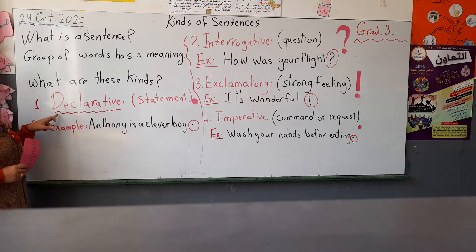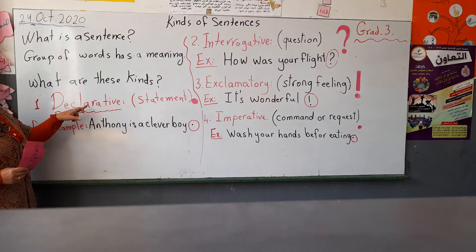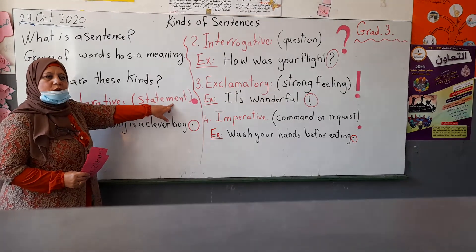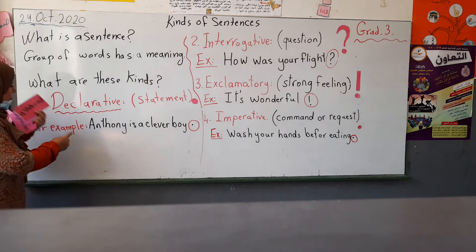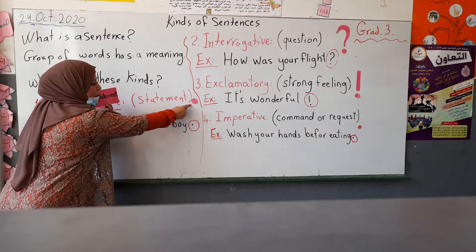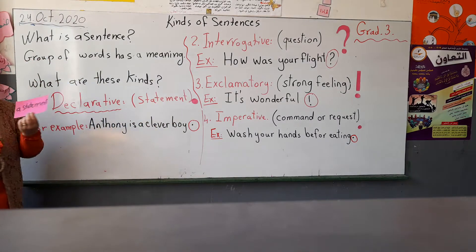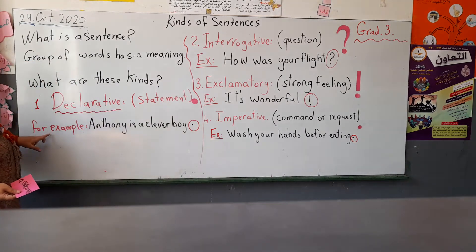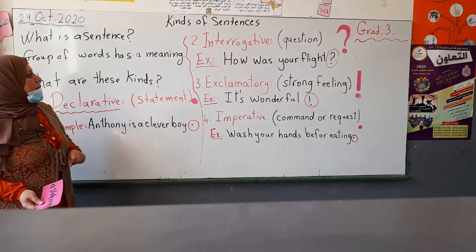Number one is the declarative sentence. A declarative sentence is the same as a statement — it is used to express a statement. Every declarative sentence ends with a full stop, which we also call a period. For example: Anthony is a clever boy.